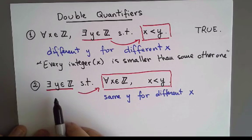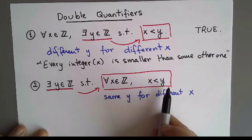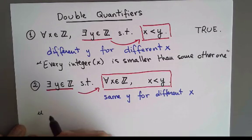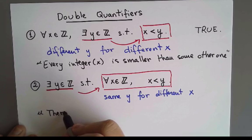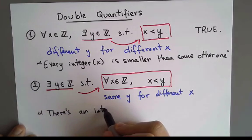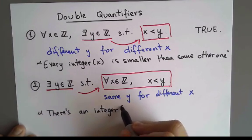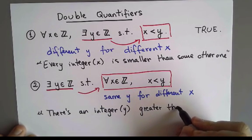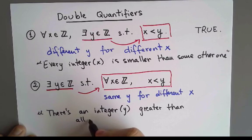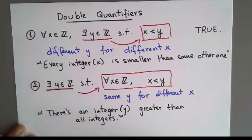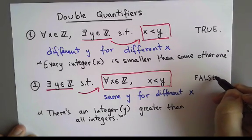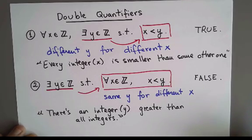But in the second case, we are saying that there is an integer y that is greater than all the integers — all of them at once. So the way to write the second statement in English is: there is an integer which is greater than all the integers. And when I put it this way, it's easier to see that it's false. There is no such thing as the largest integer, one that is greater than all of them.